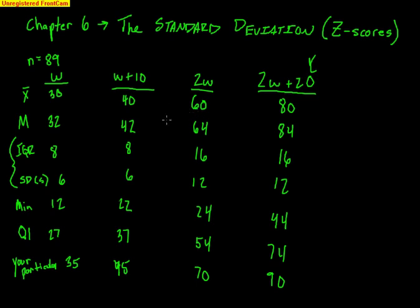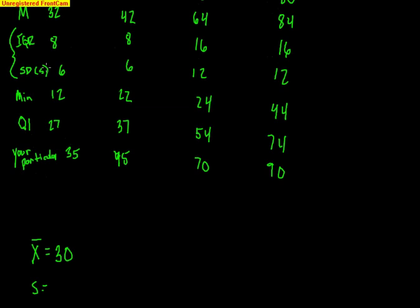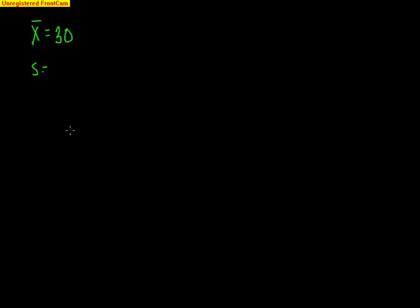Let's use this same data and talk about standardized scores. We had a mean of 30 and a standard deviation of 6. We want to talk about values in terms of how many standard deviations they are away from the mean.